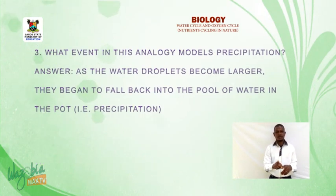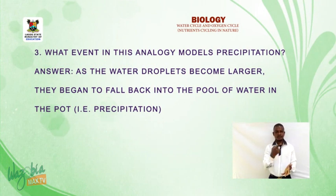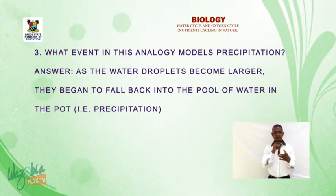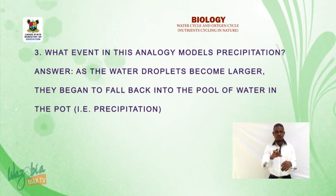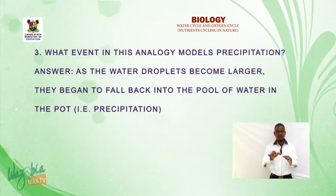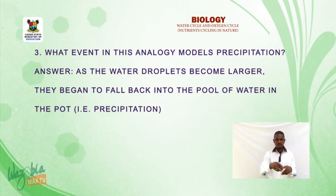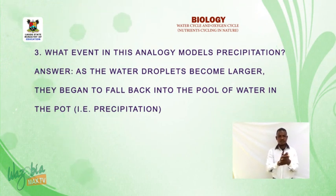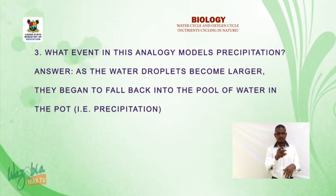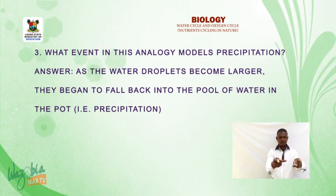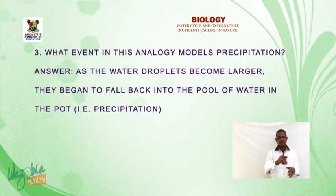Another question: what event in this analogy models precipitation? Answer: As the water droplets become larger, they began to fall back into the pool of water in the pot. That is precipitation.